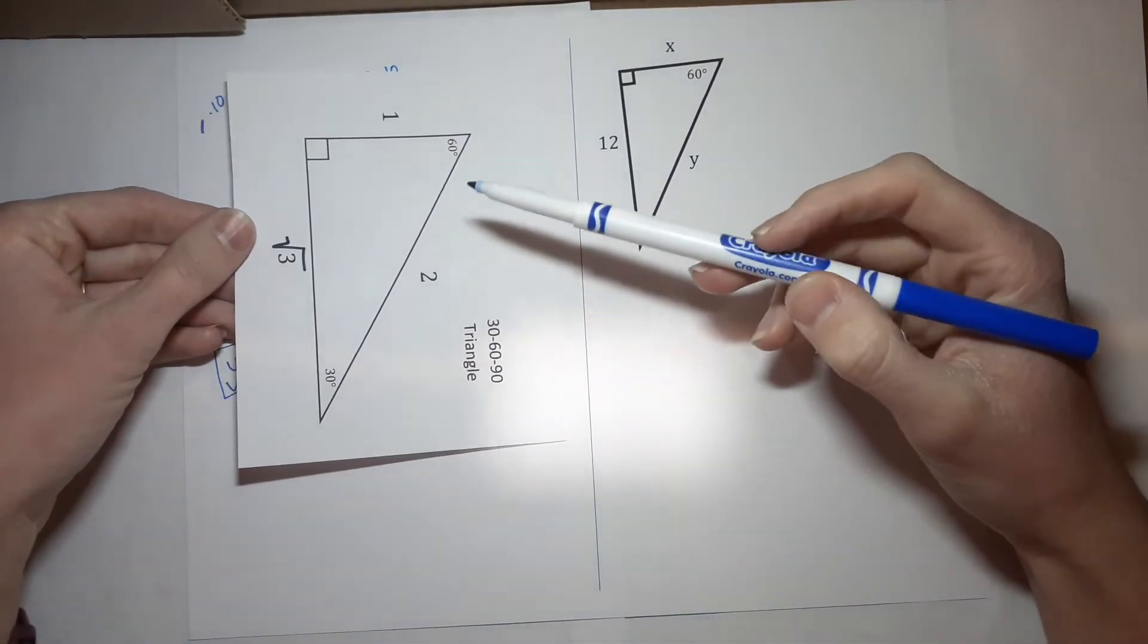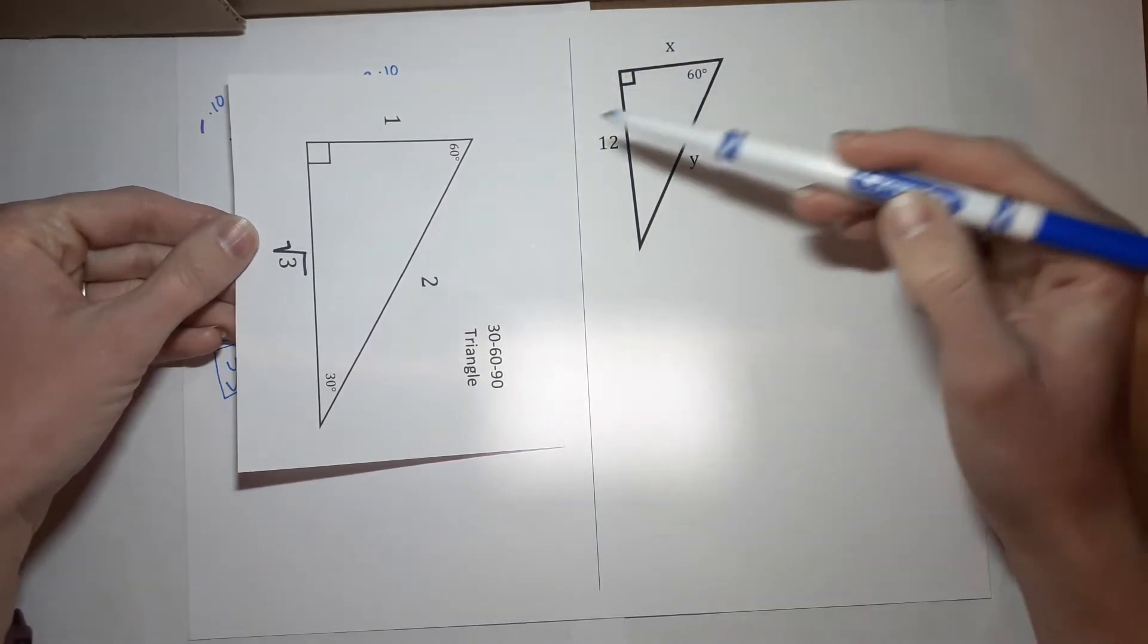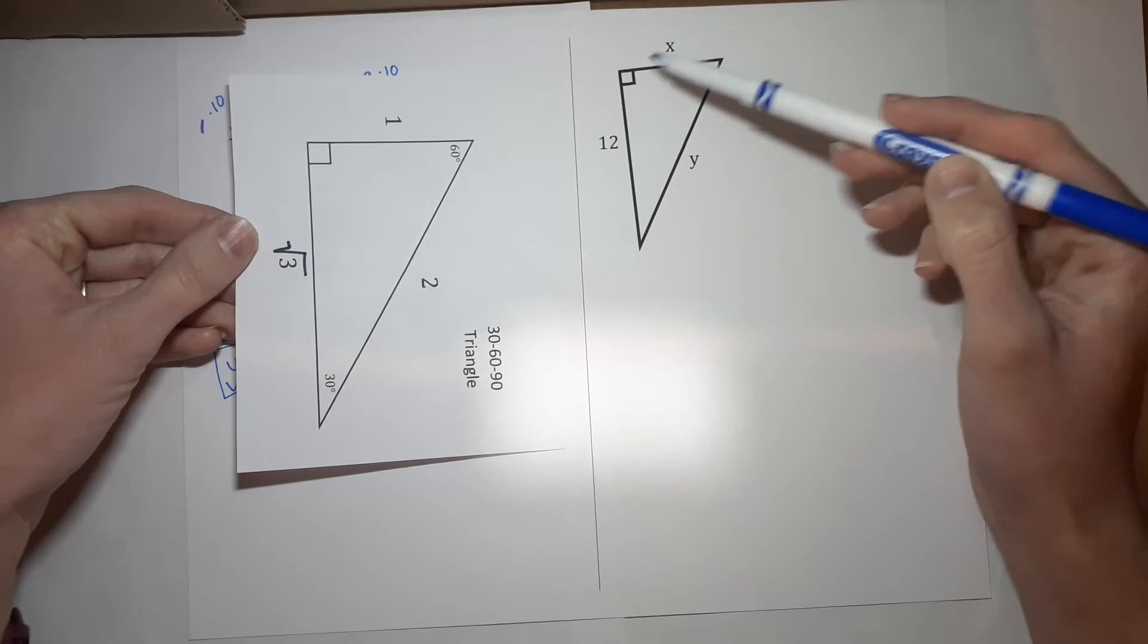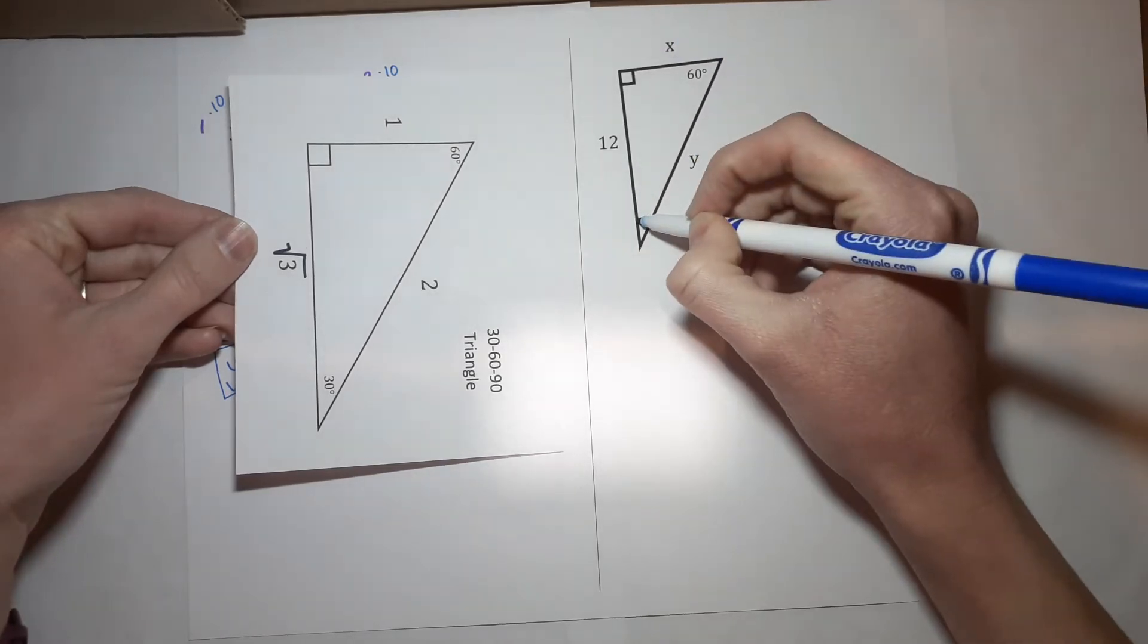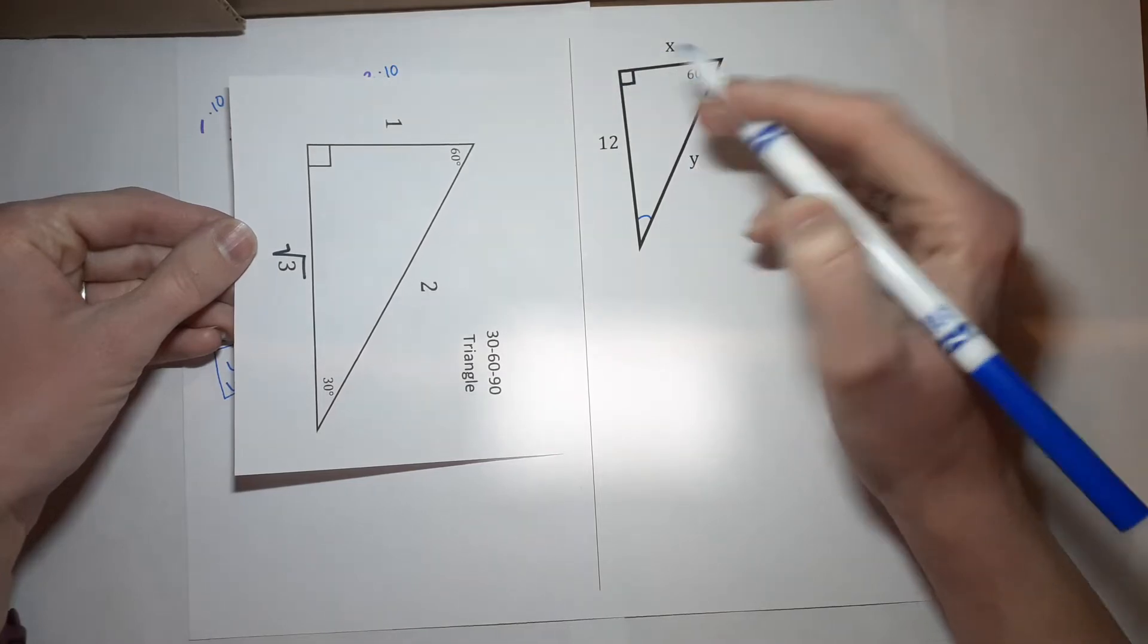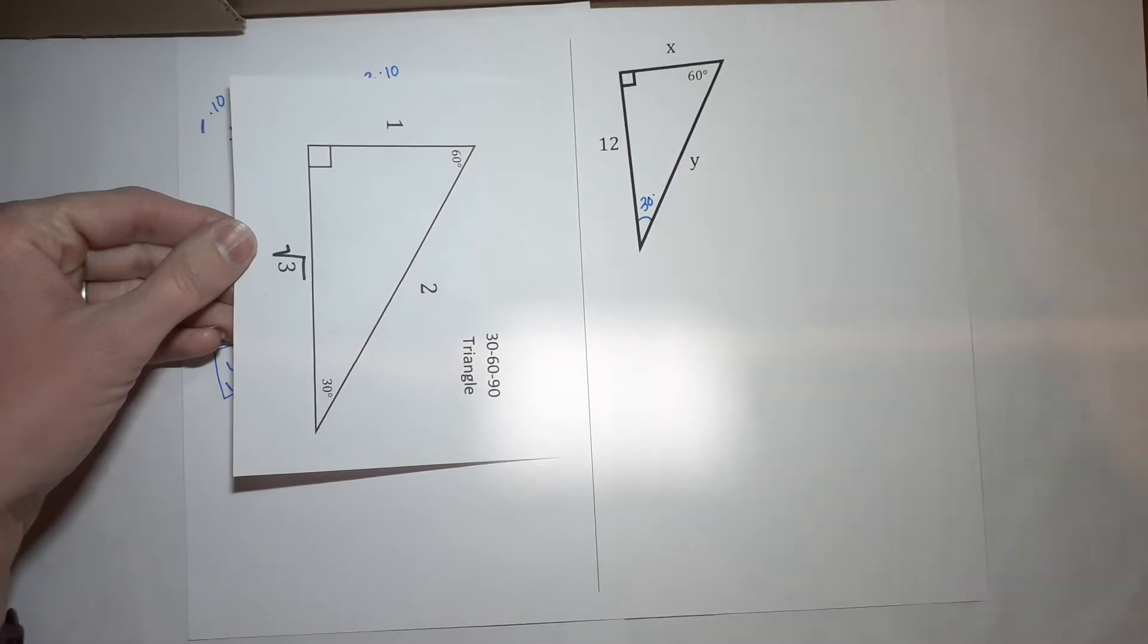They've turned it. So, this is where you need to make sure because the sides do matter. The side across from 30. How do I know that's 30? Well, because this is 90, this is 60. It adds to 180. So, that means this is 30.